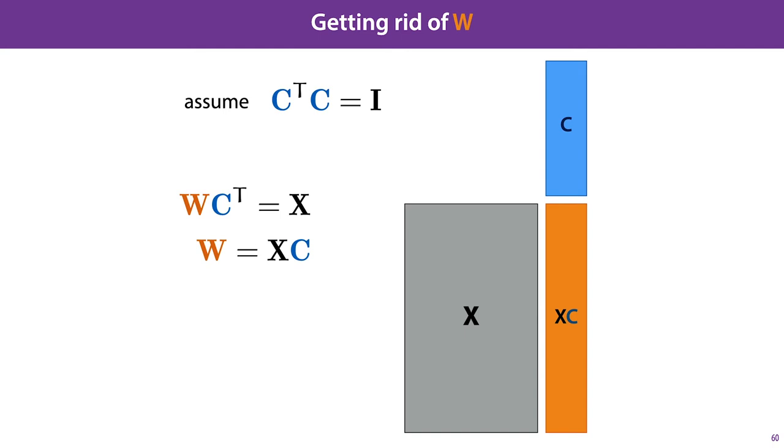And by rewriting, as in these two lines here, we see that W can simply be expressed as the product of X and C.